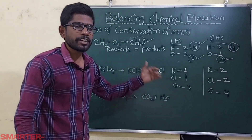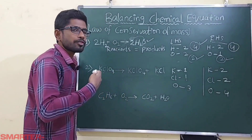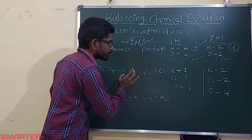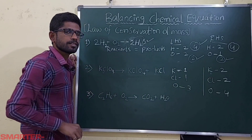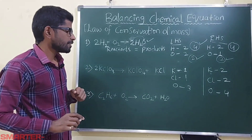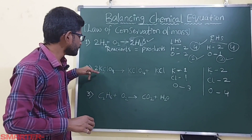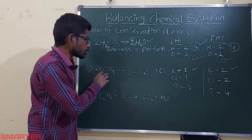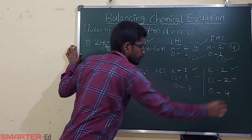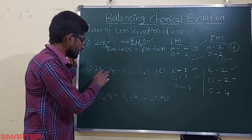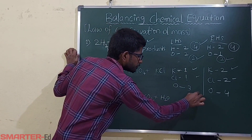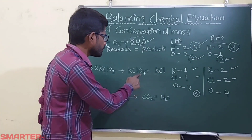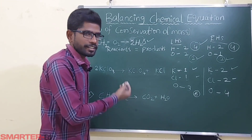We need to balance one by one. How many potassiums on the right? Two; on the left: one. So keep coefficient 2 on the left — 2K. Two potassiums balanced. Then two chlorines on the left, two chlorines on the right — done. Now oxygens: on the left, 2 times 3 = 6 oxygens. On the right, 4 oxygens. Six versus four — whatever we did is wrong. With coefficient 2, we cannot get the right result.